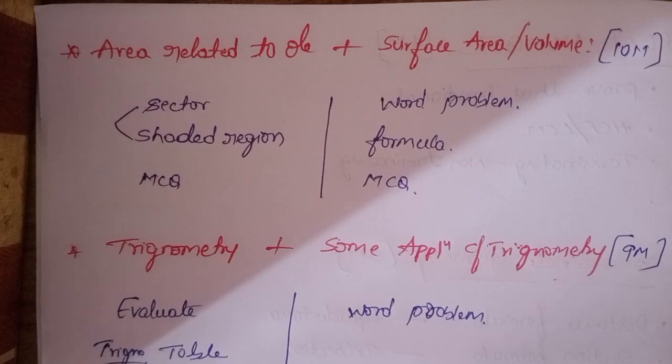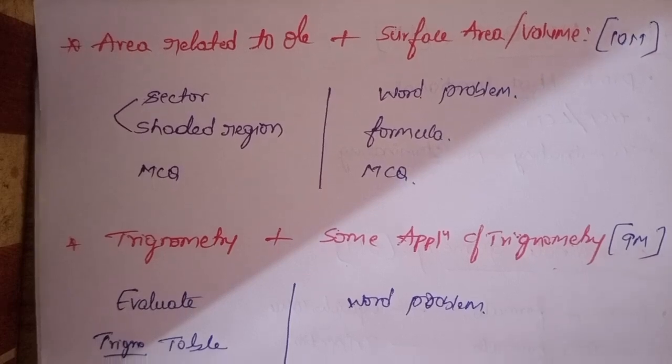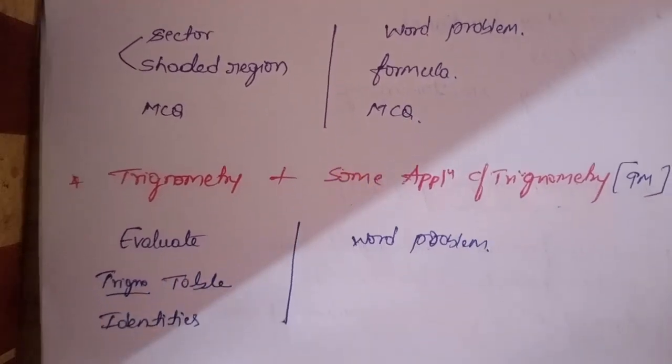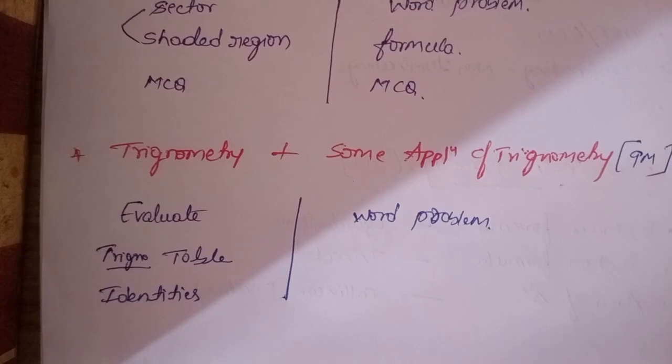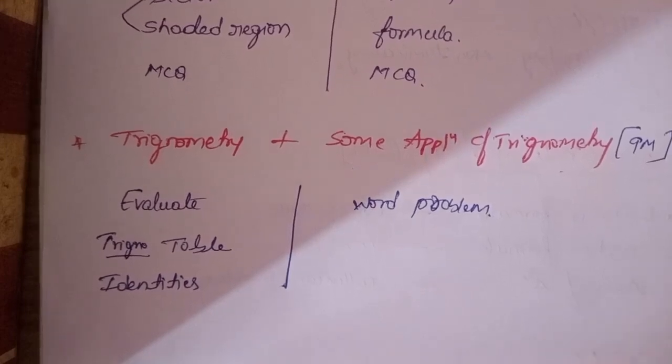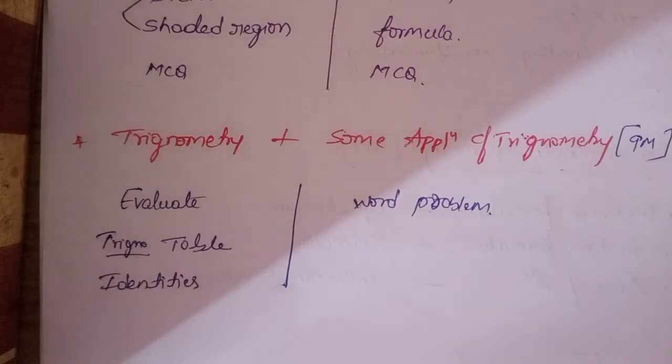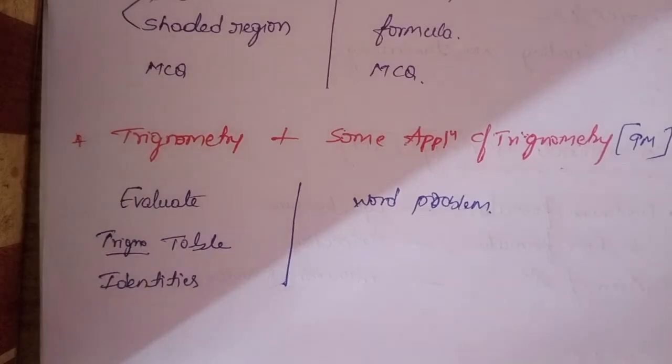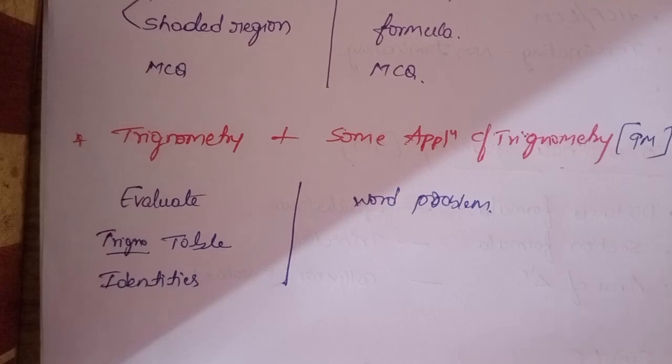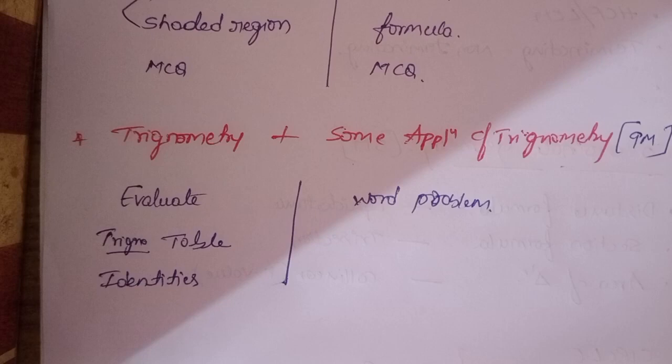Lastly, trigonometry and application of trigonometry, these are 9 marks. In the first trigonometry, we have to evaluate values and prove it: LHS equals RHS. These are 3 marks for theory and 3 marks for application.